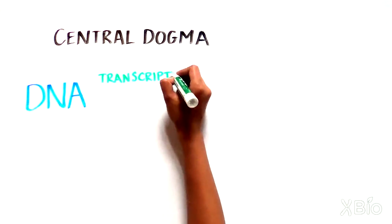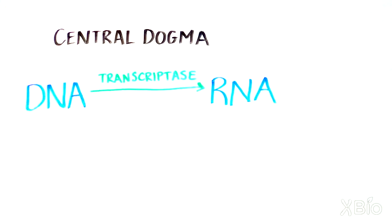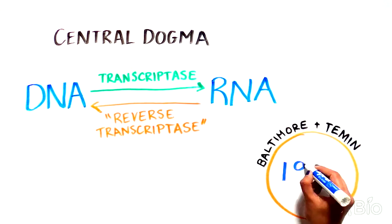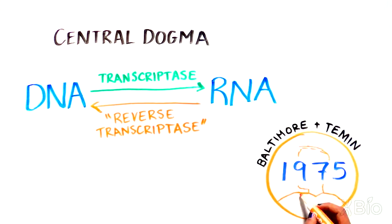This strongly suggested that the viral polymerase was converting the RNA template into a DNA product. Information was flowing in the opposite direction that Francis Crick had proposed in the central dogma. This enzyme was later named reverse transcriptase because it does transcription, but backwards. This exciting new discovery earned Baltimore and Temin the Nobel Prize in 1975.